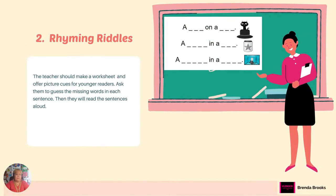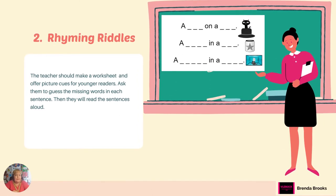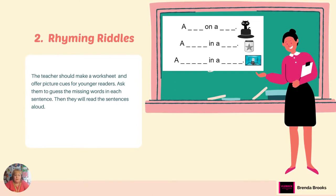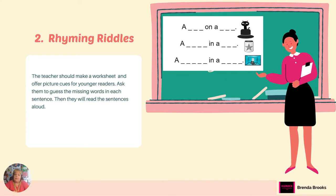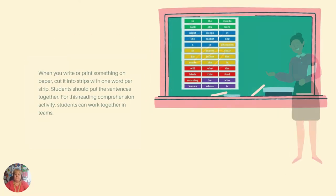Number two: rhyming riddles. The teacher should make a worksheet and offer picture cues for the younger readers. Ask them to guess the missing word in each sentence. They will then read the sentences aloud after they've figured out the missing rhyming words.